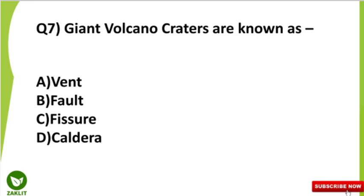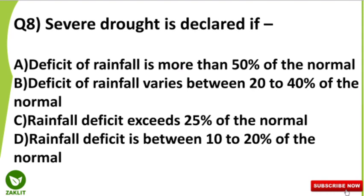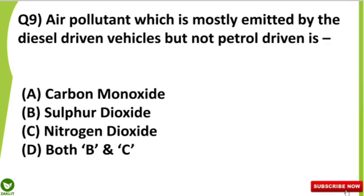The next question is: severe drought is declared if — read every option carefully. The ninth question is: which air pollutant is mostly emitted by diesel-driven vehicles but not from petrol-driven vehicles?